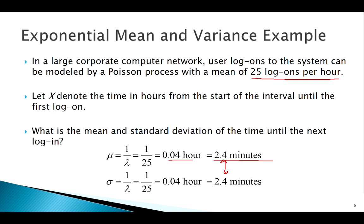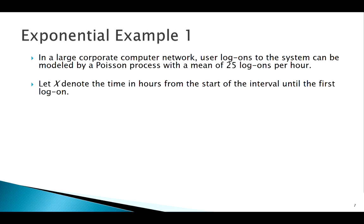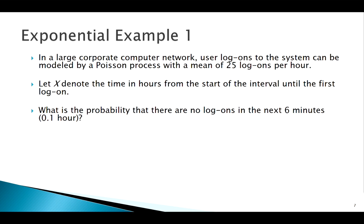There is a formula for this but you could just reason it out. Now let's look at an example of actually finding a probability — same scenario. We want to know: what's the probability we have no logons in the next six minutes? Remember, lambda is 25 logons per hour, so we have to pay attention to the units here since the question asks about the next six minutes.